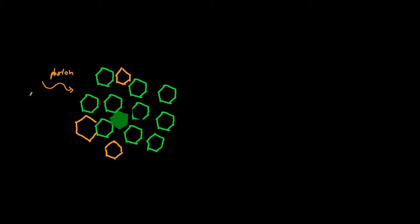When a photon strikes the electrons on chlorophyll or the carotenoids, the electron gets excited. I will represent the electron with the color blue, and we'll draw an arrow to show that it went up in energy level. When this electron becomes stimulated by the energy of the photon, the energy — but not the electron itself — is passed on to the next chlorophyll molecule.